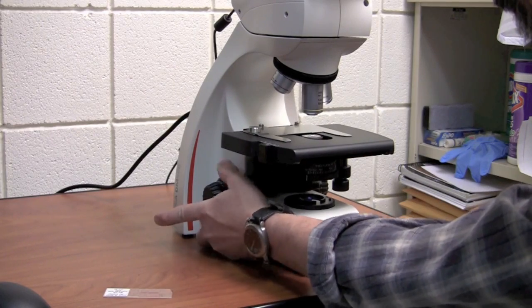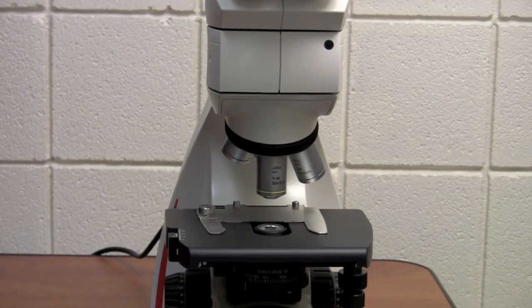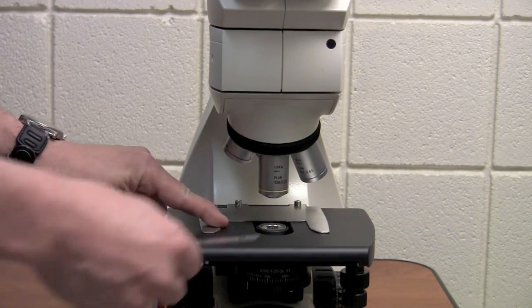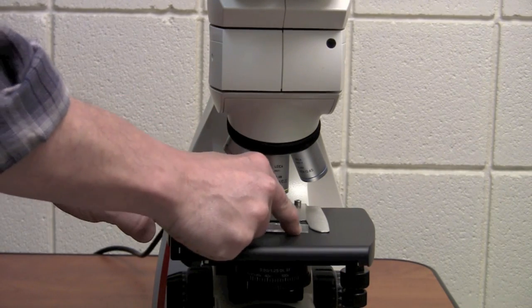When the stage stops moving, place the slide onto the stage so that it's pushed all the way back and the label is easy to read on the left hand side.